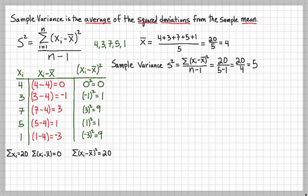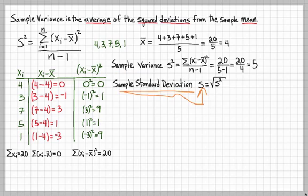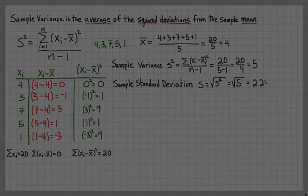We also want to calculate the sample standard deviation. That's represented as S, and we take the square root of the variance S². So S is the sample standard deviation and S² is the variance. For this problem, we take the square root of 5, which gives approximately 2.24.